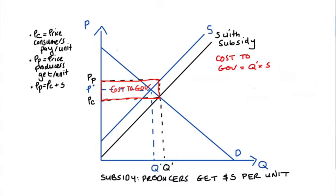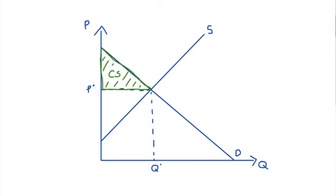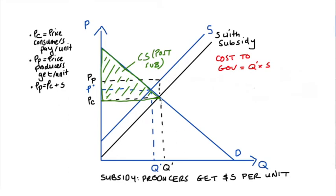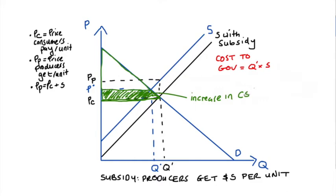Our consumers are consuming more than before since q' is larger than q*, and they're paying less per unit because pc is lower than p*. Taking the area beneath the demand curve above the price consumers pay and comparing it to the original consumer surplus, we can see that consumer surplus has increased by exactly this amount.